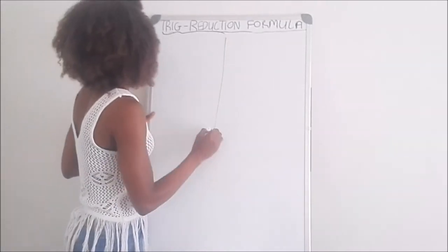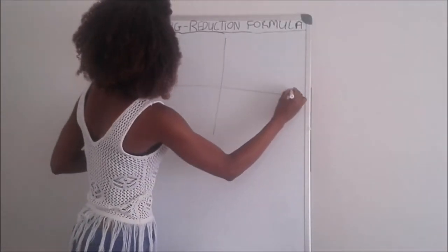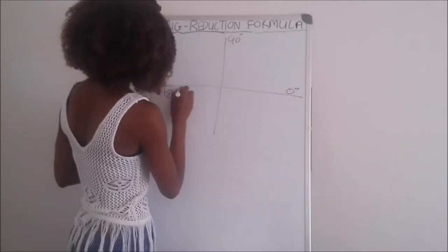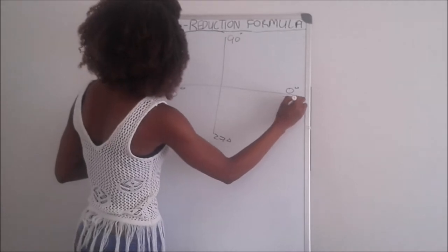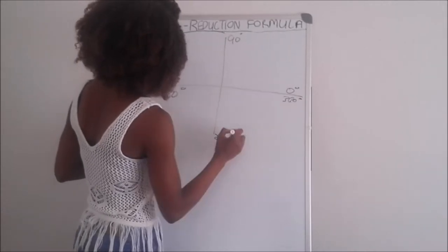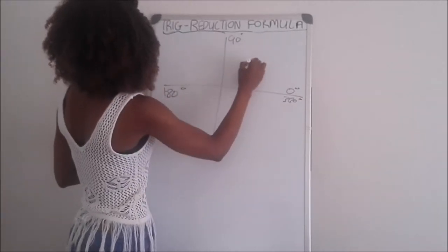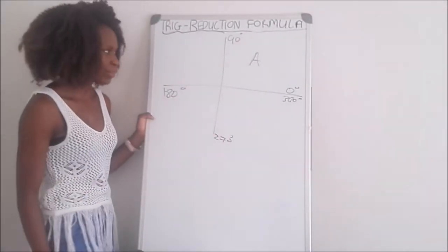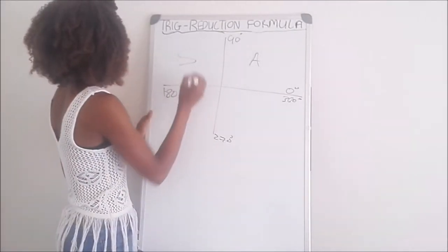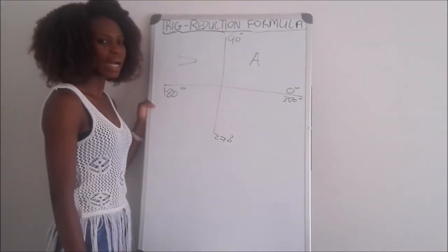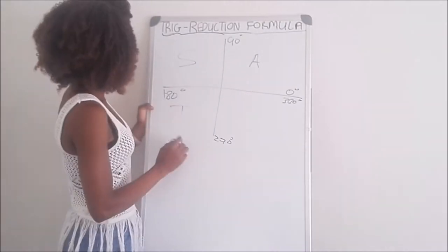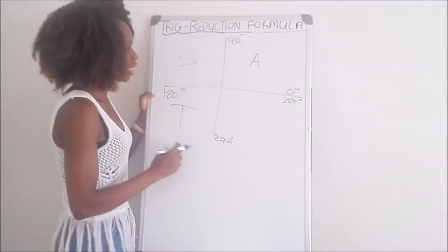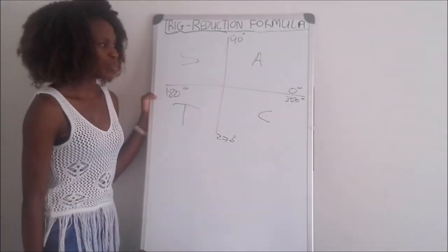A quick revision: in the Cartesian plane you have 0 degrees, 90 degrees, 180 degrees, 270 degrees, and 360 degrees. In the first quadrant we have A, which stands for all trigonometric ratios are positive. In the second quadrant we have S, which stands for only sine is positive. In the third quadrant T stands for only tan is positive, and in the fourth quadrant only cos is positive.